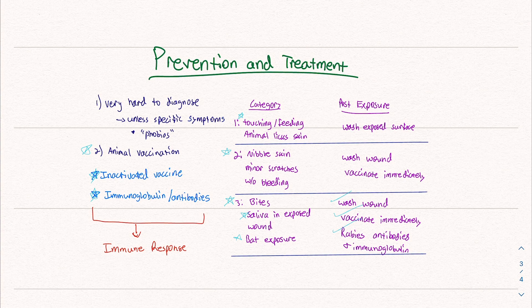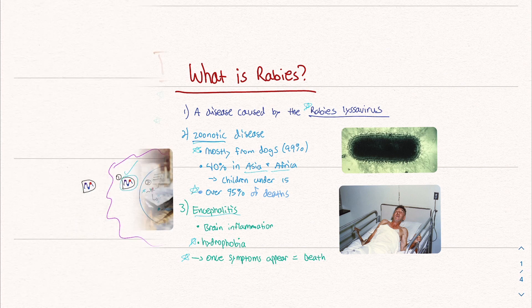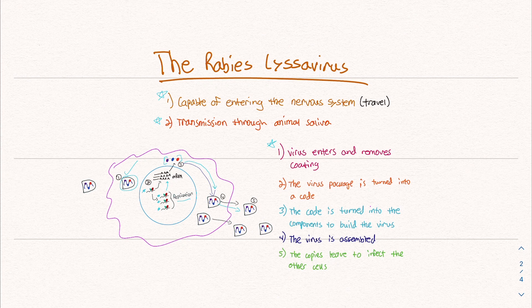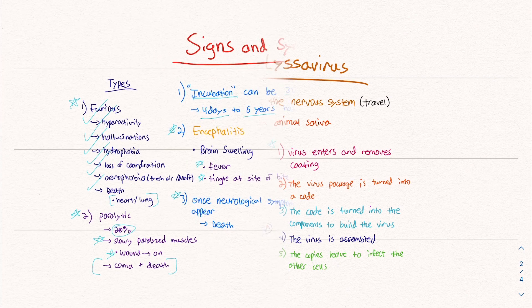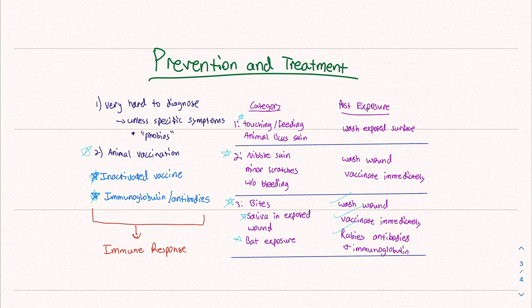So let's go through the summary. We started off defining rabies — it's a disease that comes from animals, mostly dogs, and it causes encephalitis. The rabies lyssovirus infects the nervous system: it gets into a cell, the genetic material is copied, turned into a code, that code gets turned into the pieces of the virus, those pieces get assembled, and then those copies leave the cell and go infect other cells. Once you're infected, it can take a little time for symptoms to show up. There are two types — furious and paralytic rabies — but once neurological symptoms appear, it's a 100% chance you will die. Rabies is hard to diagnose, the best prevention is vaccinating animals, and depending on your exposure you may need a vaccine and additional antibodies and immunoglobulins.